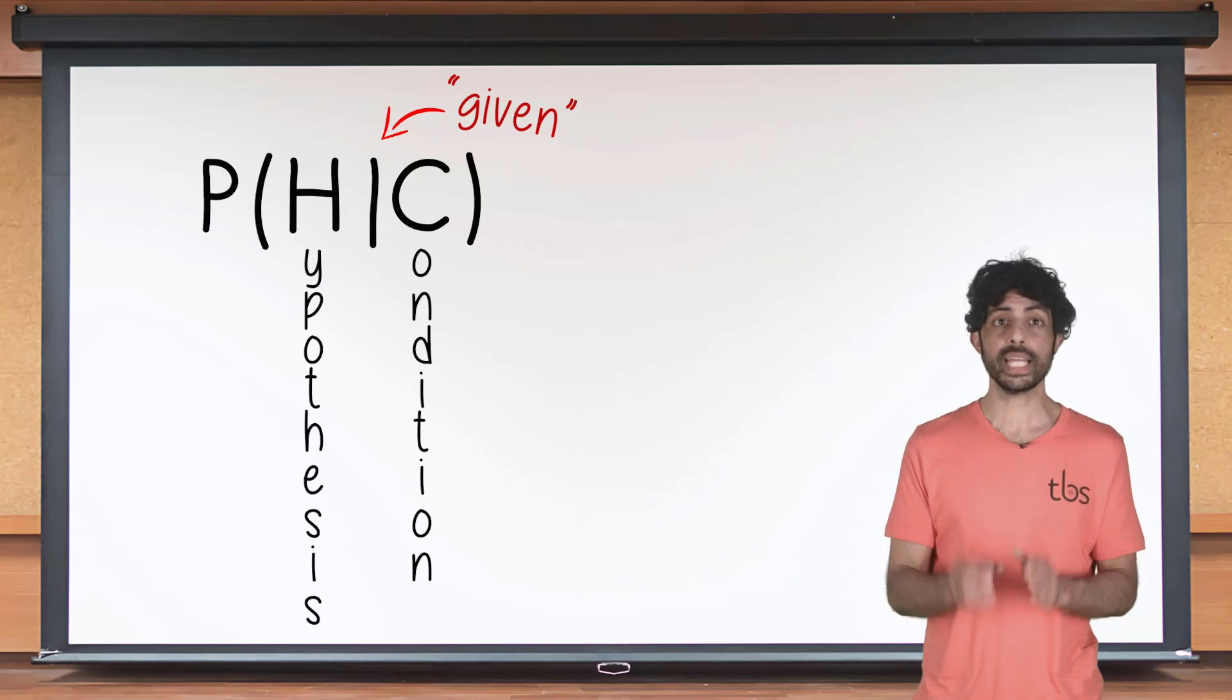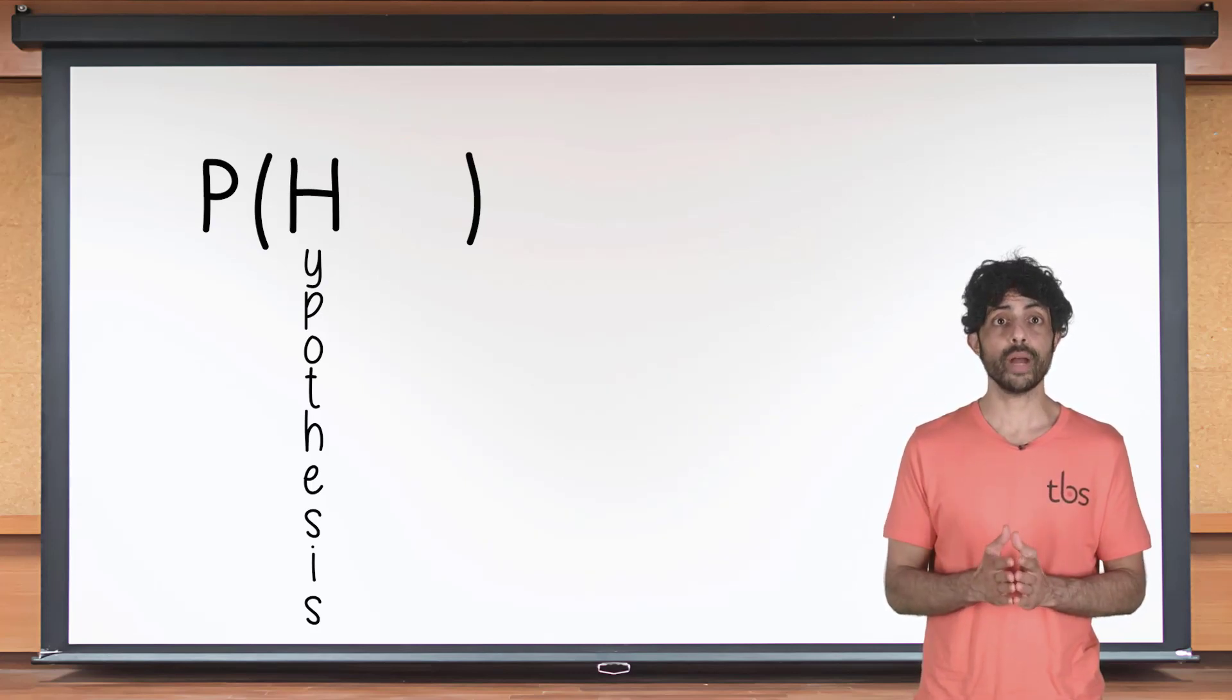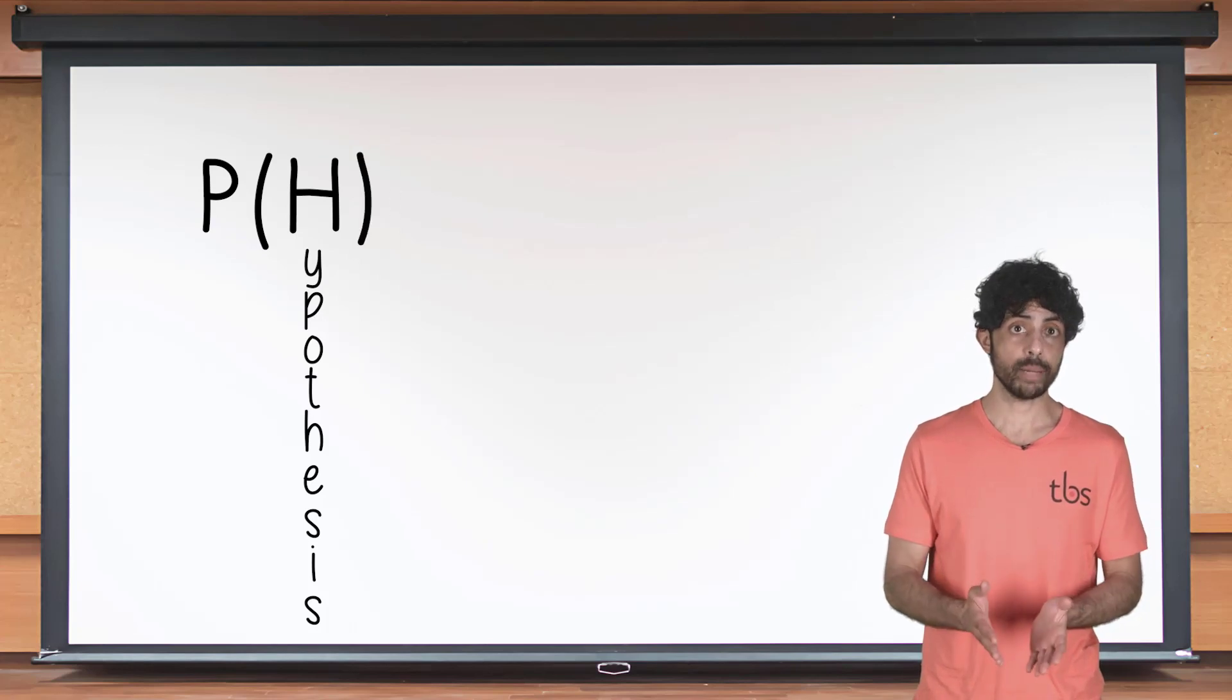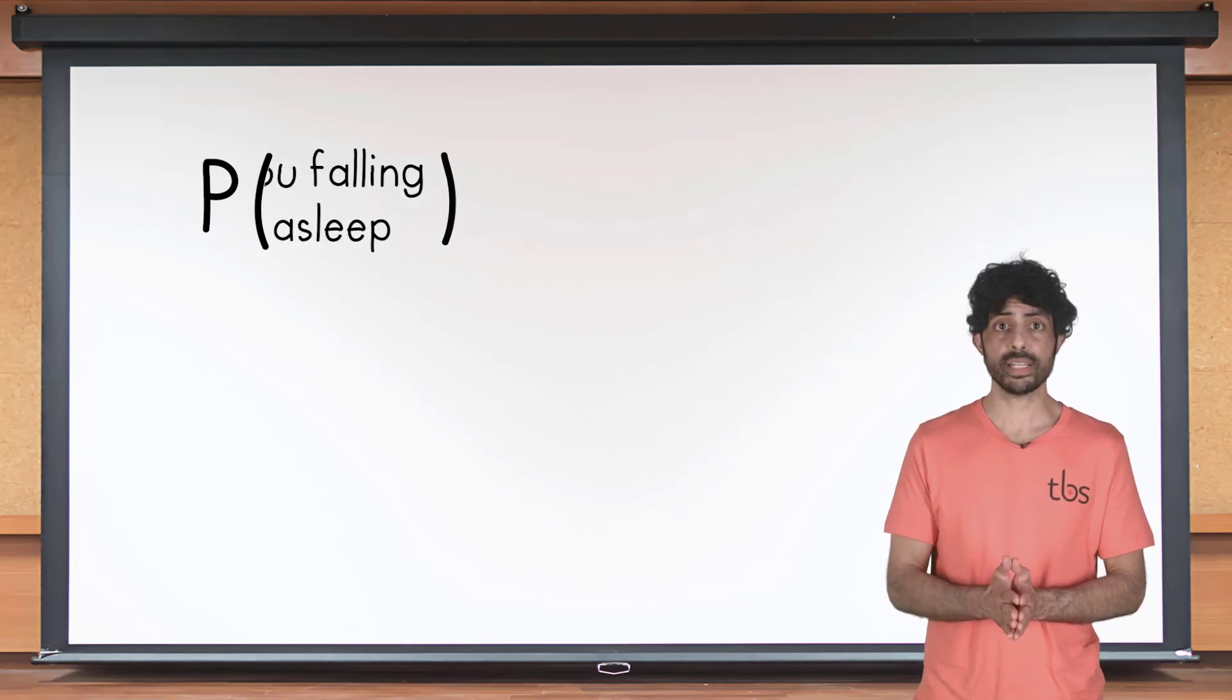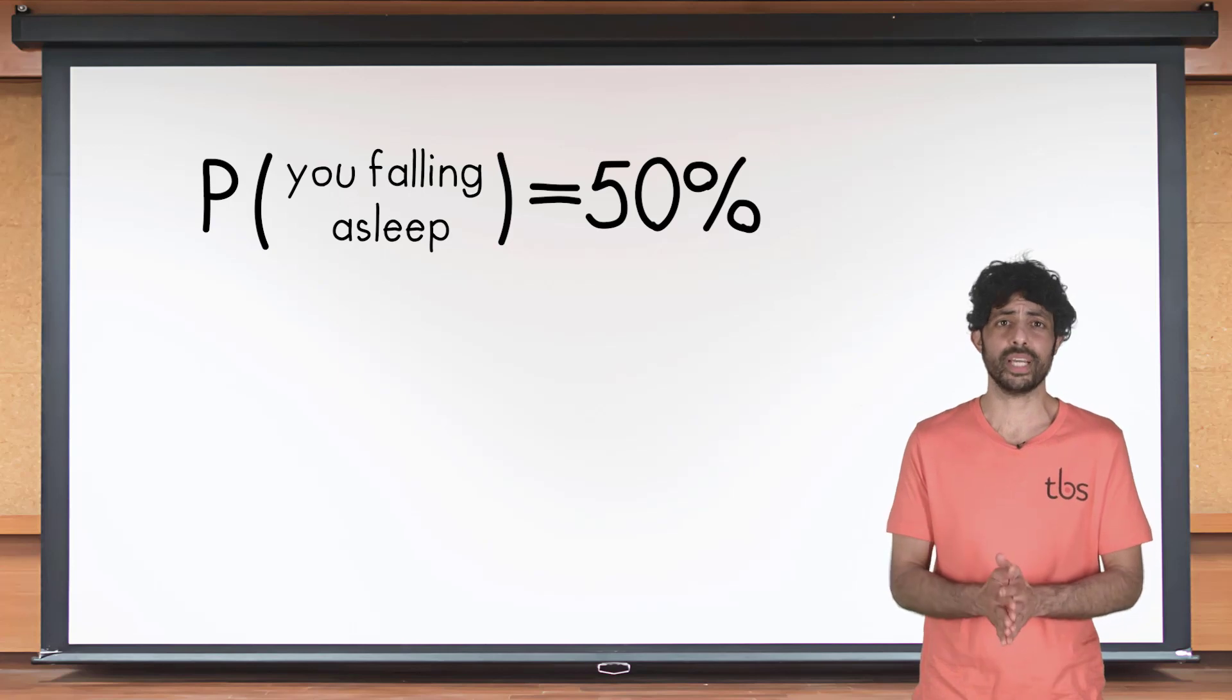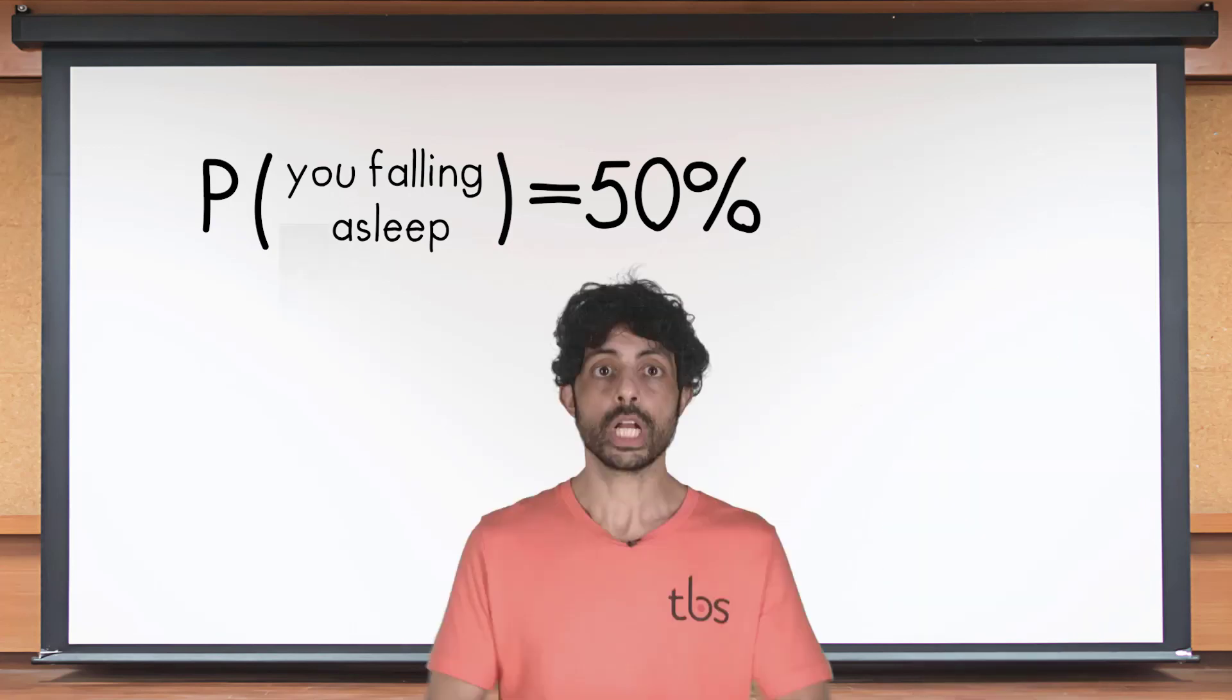Conditional distinguishes it from a probability without conditions attached, which we simply write as P of H. For example, the probability that you are falling asleep right now is maybe 50 percent. Conditional on me saying 'come on this is useful information,' the probability is only 49.5 percent.